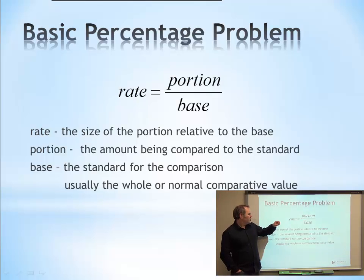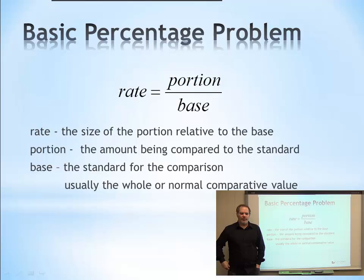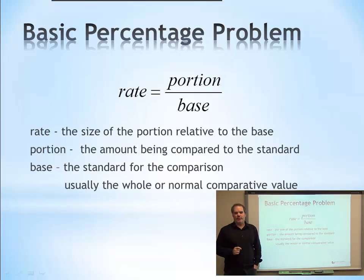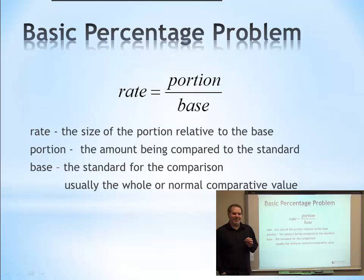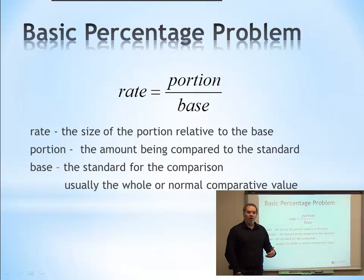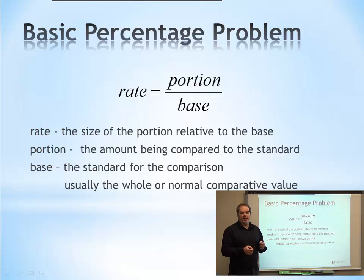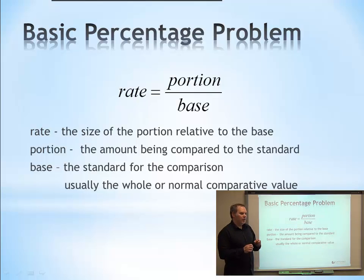A percentage is a value which is a rate. A percentage rate is a portion compared to a base. If I did a test and got 75%, that might mean I got 6 out of 8 questions right, or 15 out of 20. The portion is the amount being compared to the standard, the base is the standard for comparison. For an exam, the base is all the questions on the exam, the portion is how many were right, and the rate is the resulting percentage. The base is usually the whole or the normal comparative value.